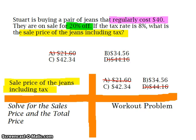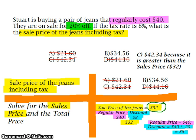Now, how am I going to solve my problem? I'm going to solve for the sales price and also for the total price. The first thing I'm going to do is find what the sales price of the jeans is. We know in order to do that, we're going to take the regular price and minus our discount: $40 minus $8 is $32. Whenever you find an answer, compare it to your answer choices to see if there's anything you can eliminate. I can eliminate C, $42.34, because it's greater than the sales price of $32. So we know that can't be the answer — C is crossed out. The only answer choice I have left is B, $34.56.